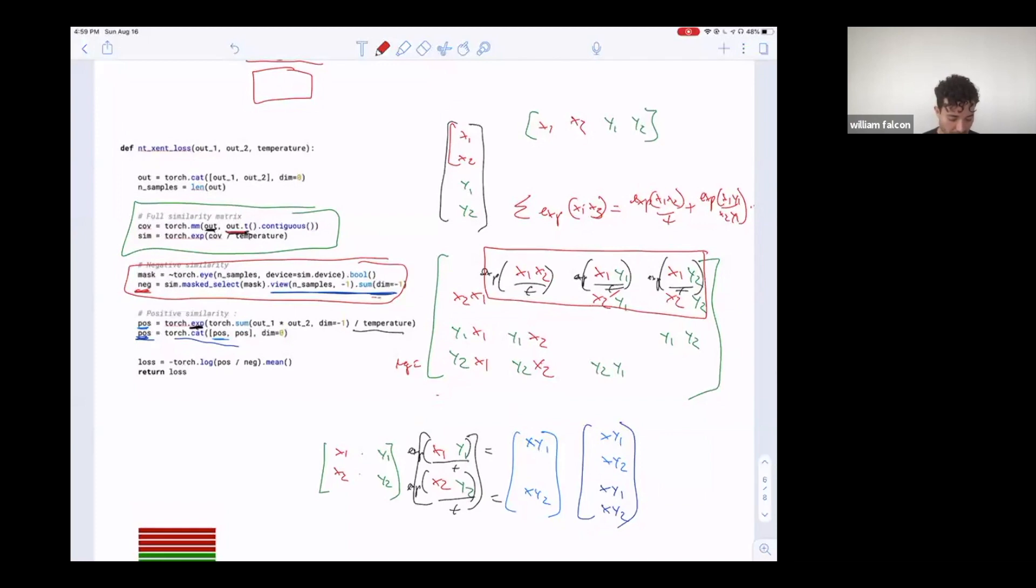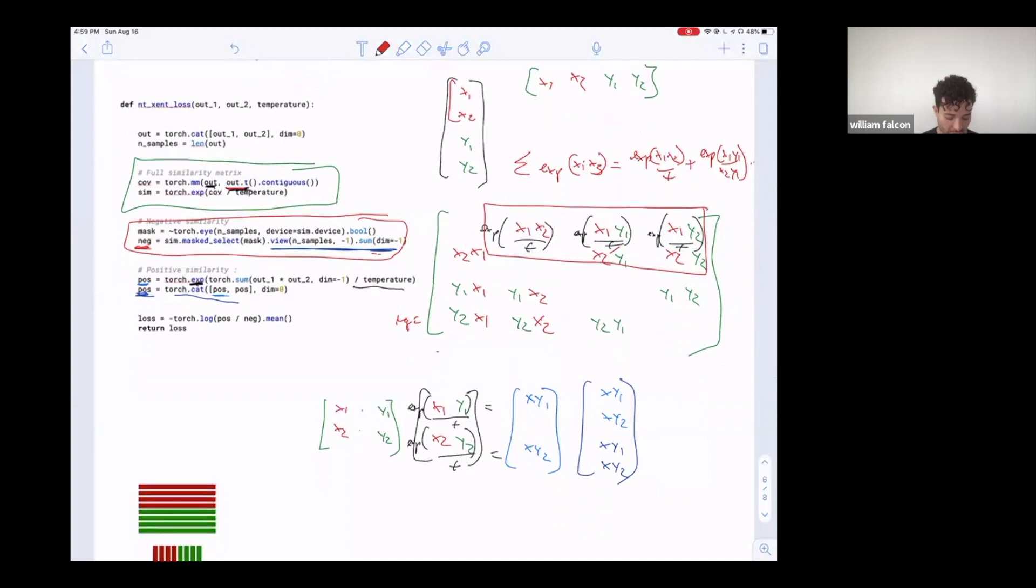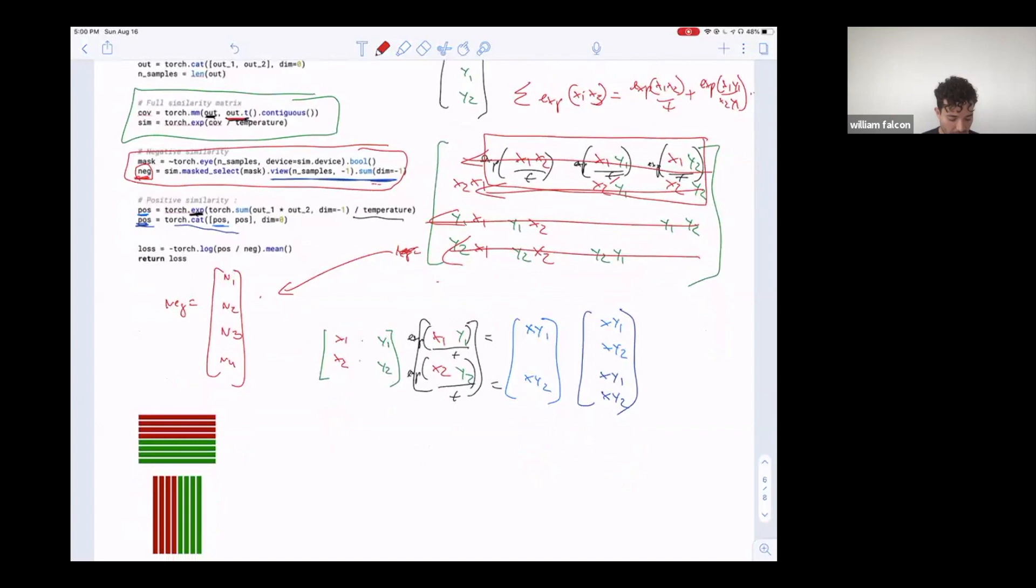So this negative is actually going to end up being the sum of these guys, and we'll call these like n1, n2, and n3 to show that these are the negative samples. Sorry, these are four of them - yeah, you have four. Yeah, so these are the negative scores. Okay, so this negative is these guys summed across - like this one, two, three, four - and you end up with this here: n1, n2, n3, and n4.